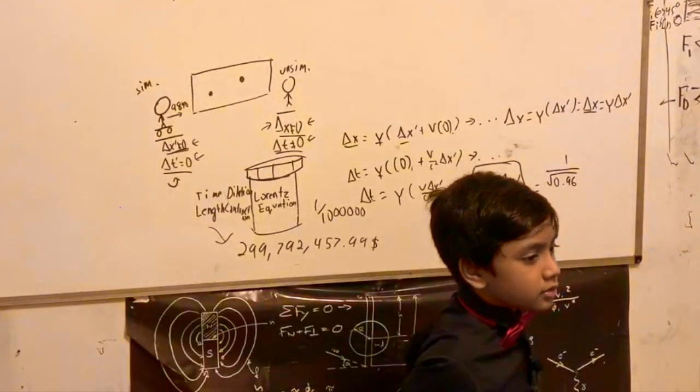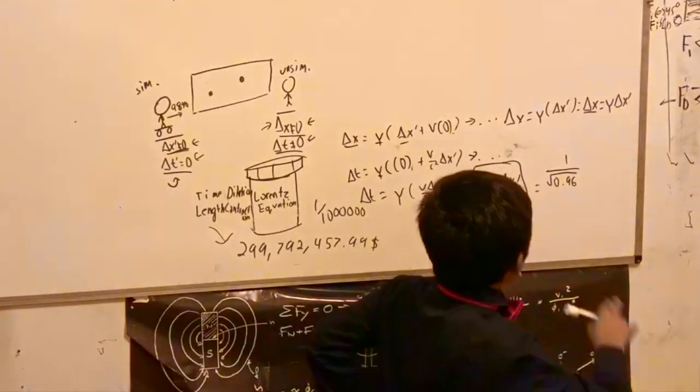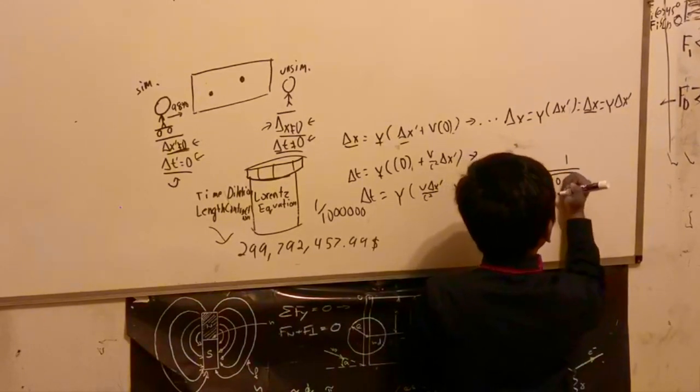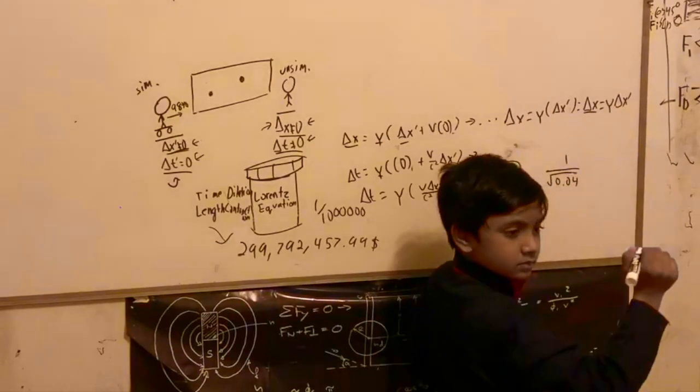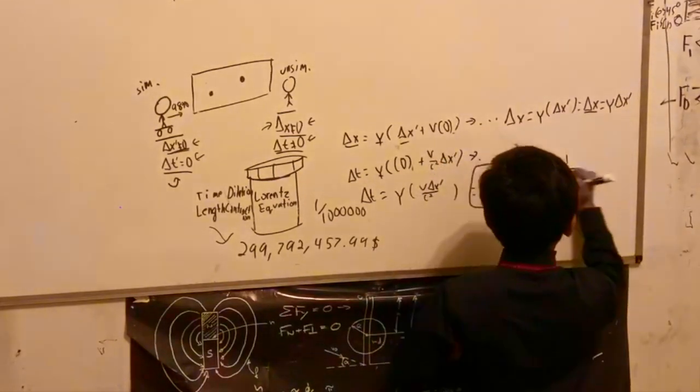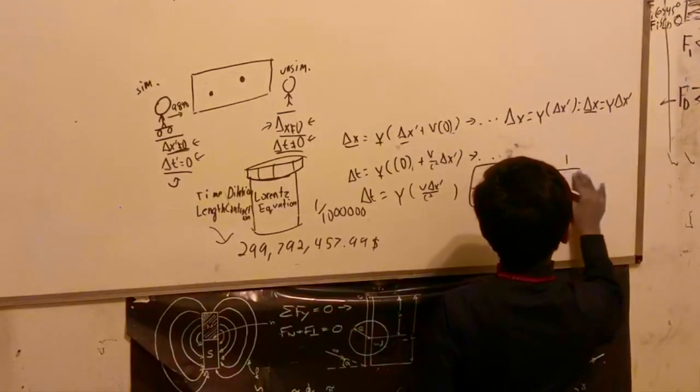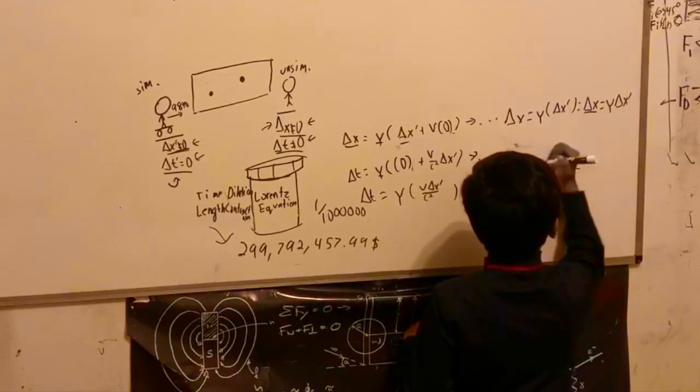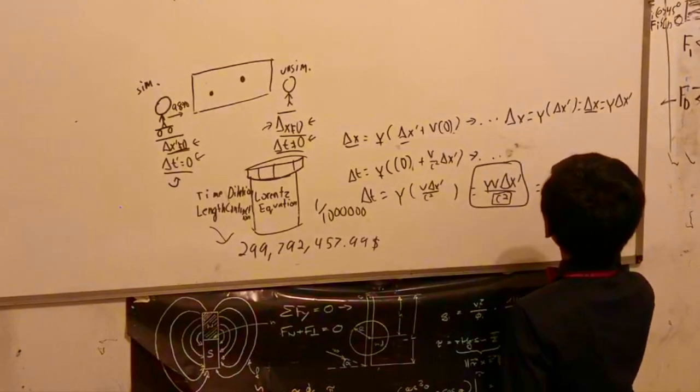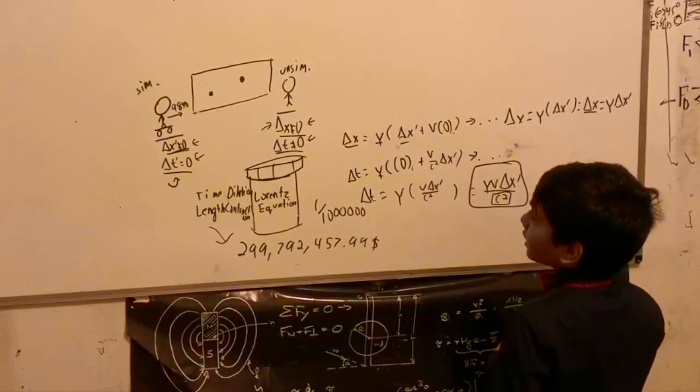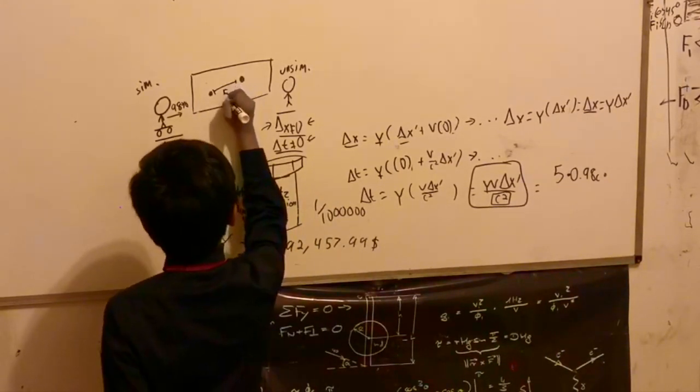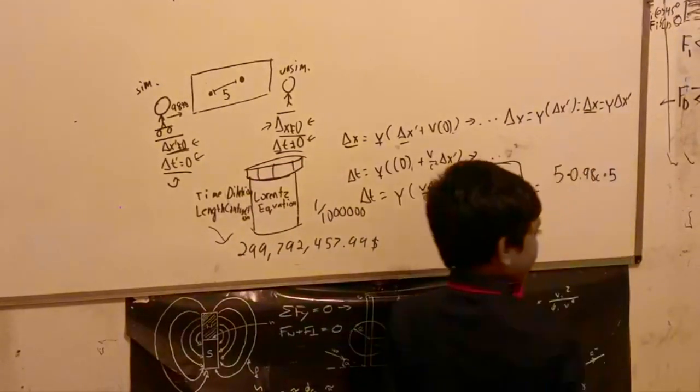1 minus 0.96 is 0.04, and if you take the square root you get 0.2. So 1 over 0.2, which gives us, if we multiply everything by 5, 5 over 1. So that gives us about 5. And then we have a multiplication of 0.98c times delta x prime. Delta x prime we can just set to some arbitrary value like 5, so 5 is now...